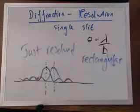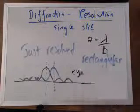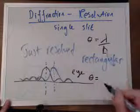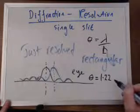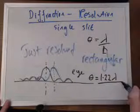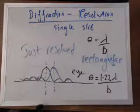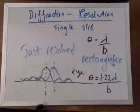And for an eye, which is a circle, the formula is changed for the angle of the first minimum, angle to the first minimum. And what we're going to get is 1.22 times the wavelength over B, where B is the slit width and λ is the wavelength of the light.